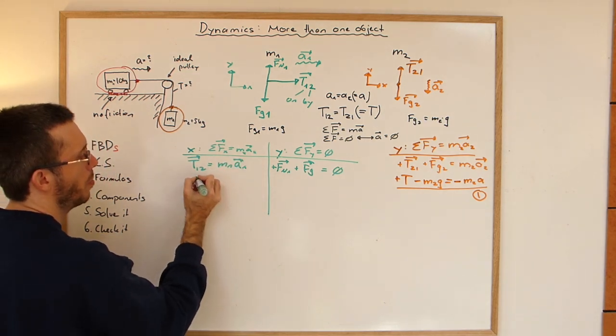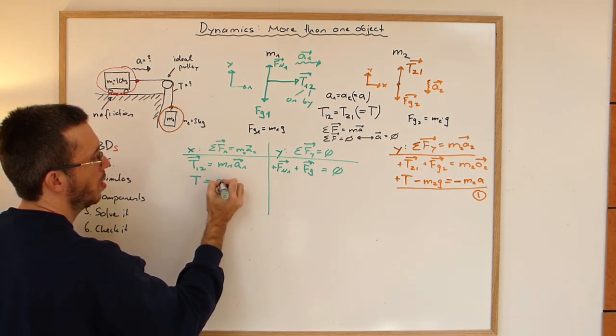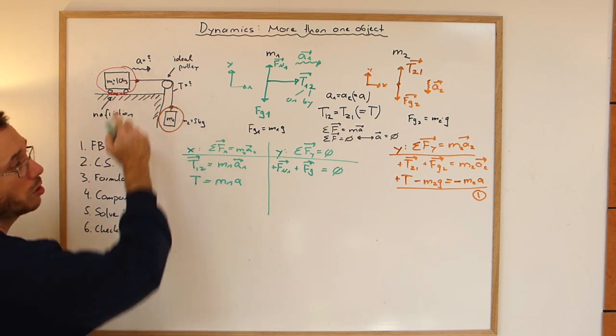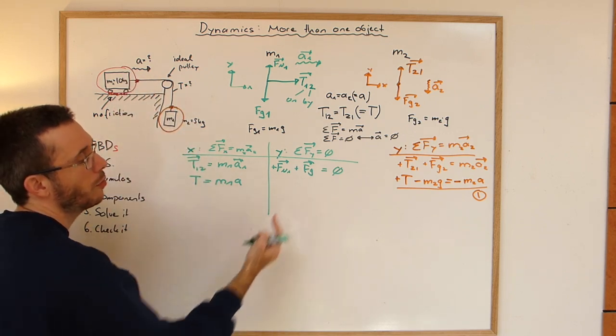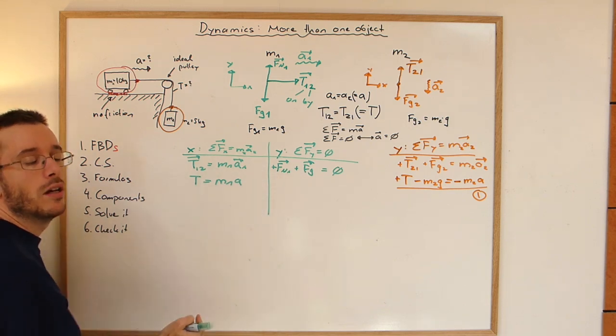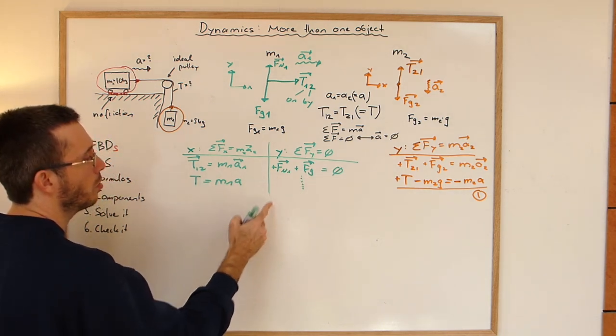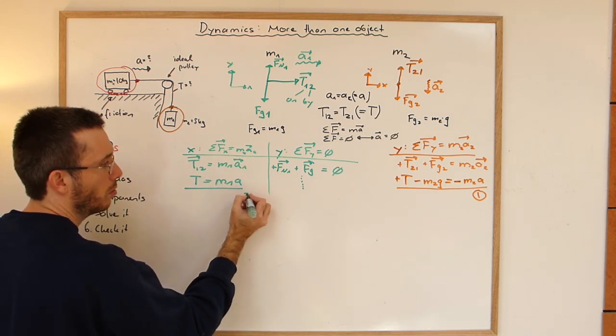Now this one here doesn't give me anything if I'm looking for the tension or the acceleration. All this one is going to give me, in this case, is that the normal force is equal to gravity. But I don't need to continue here. This is my second equation.